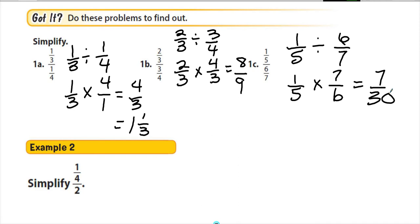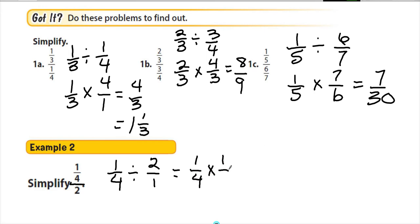The next one is a little different: simplify 1 fourth divided by 2. The second fraction bar is slightly bigger — that's where the division sign is. So it's 1 fourth divided by 2, and we write 2 as a fraction: 2 over 1. Keep, change, flip makes it 1 fourth times 1 half, which gives 1 on top and 8 on the bottom — the answer is 1 eighth.